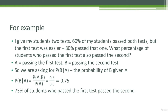Now, how do I figure out the percentage of students who passed the first test and also passed the second? That's conditional probability. We're asking for P(B|A) — the probability of passing test two given that you passed test one. Using our equation: P(B|A) = P(A,B) / P(A) = 60% / 80% = 75%. So 75% is the conditional probability of passing the second test given that you passed the first.